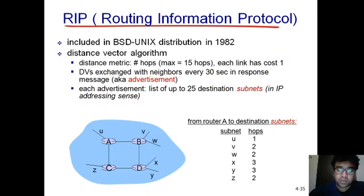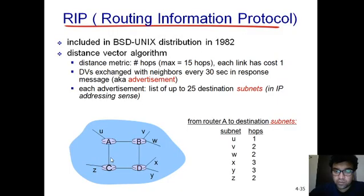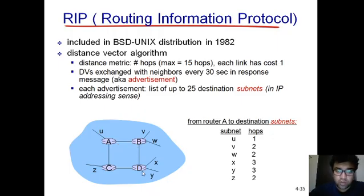The distance vector is exchanged with neighbors every 30 seconds in a response message, also called an advertisement. Each advertisement lists up to 25 destination subnets. In a small autonomous system with four routers, a routing table is created by each node — the first column contains subnets to reach, and the second column contains the number of hops. Each link has a cost of one, so A to B is one hop, B to D is one, D to C is one, and C to A is one.